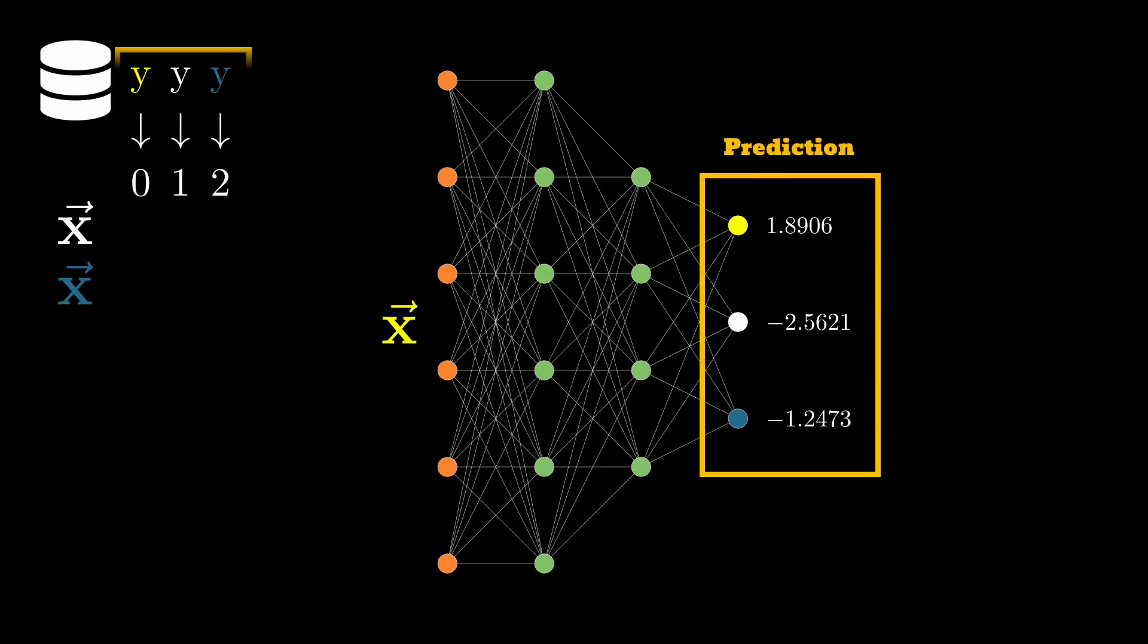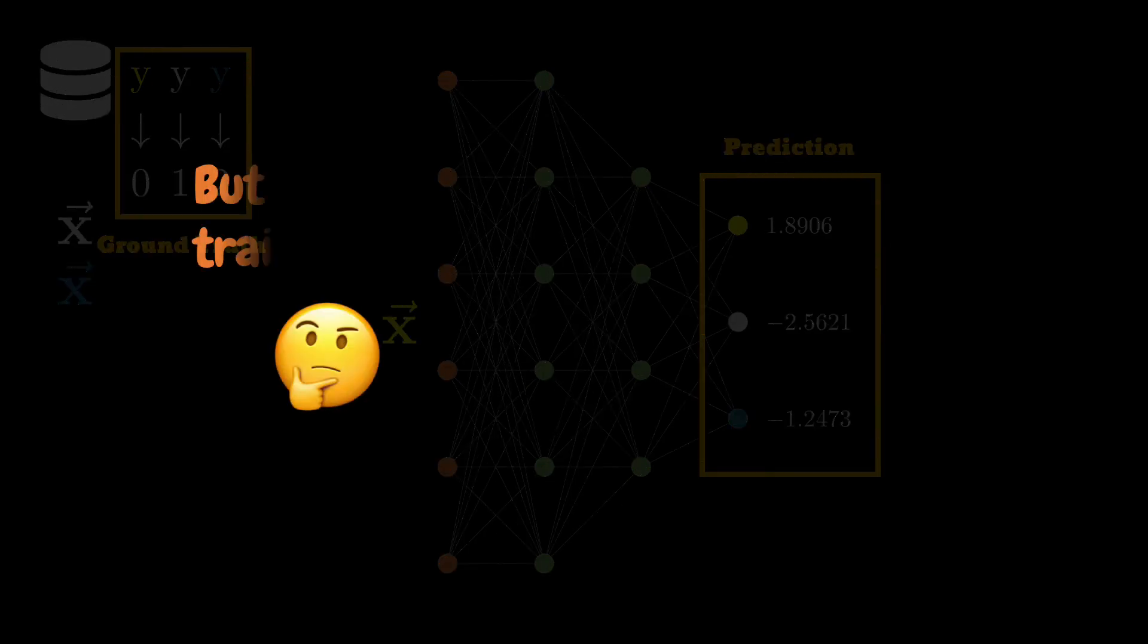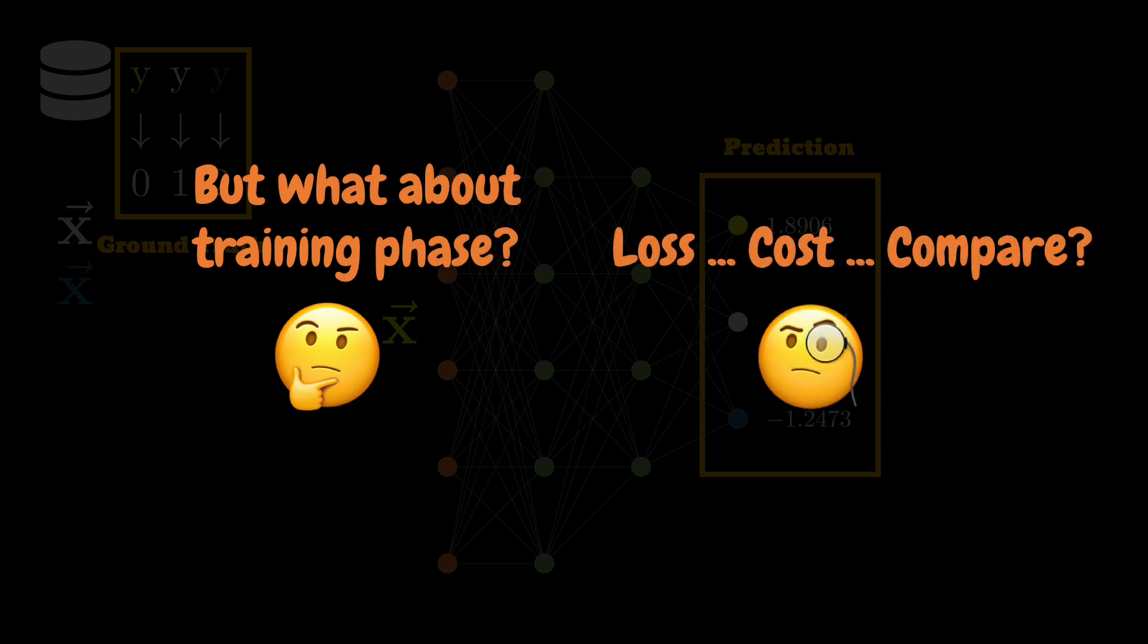Now so far we have used argmax or argsort to give meaning to the predictions and more importantly, we got the class labels by using this method. We have not considered how to deal when we are training the neural networks. During the training phase, we are supposed to compare the predictions with the ground truth.